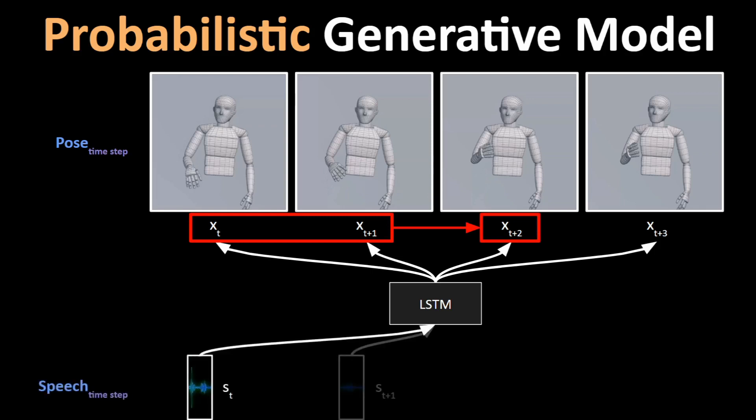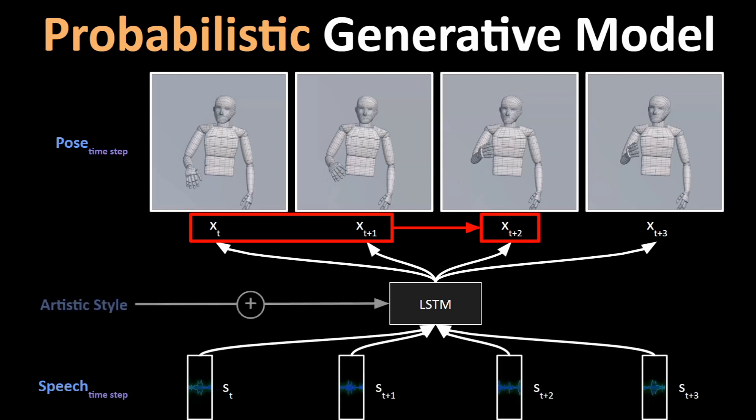First of these inputs include acoustic features from our input speech with a sliding window mechanism. Next input is an optional style parameter which we can add to this model to control the type of animations that it generates.